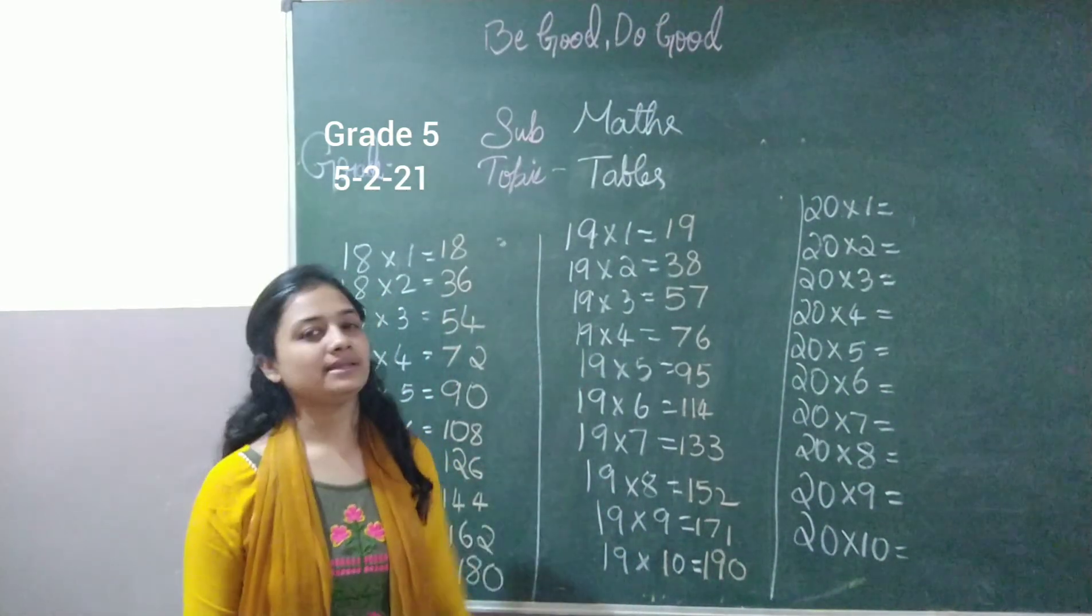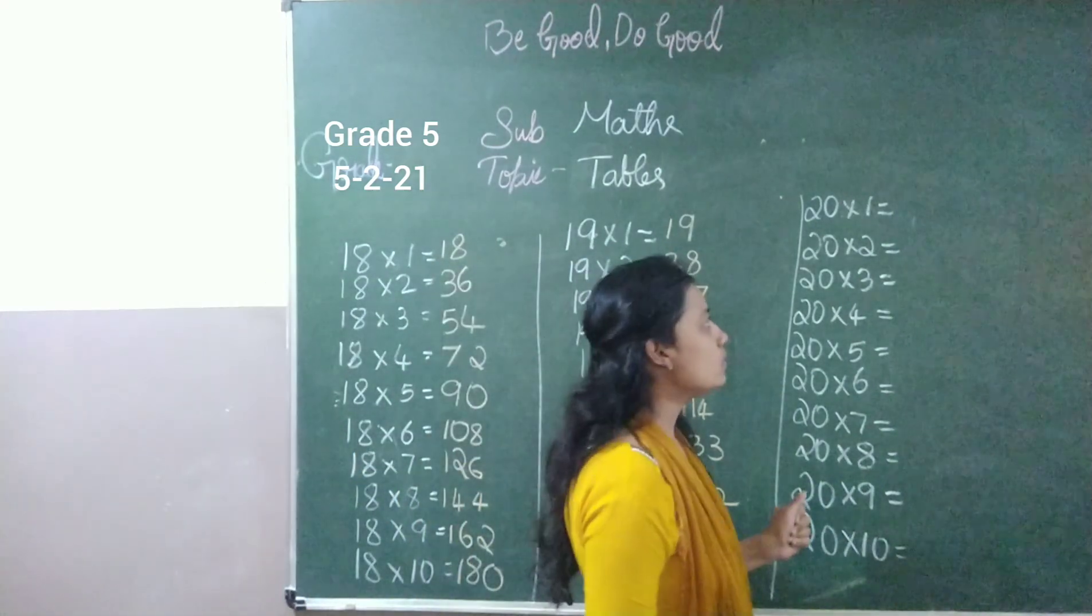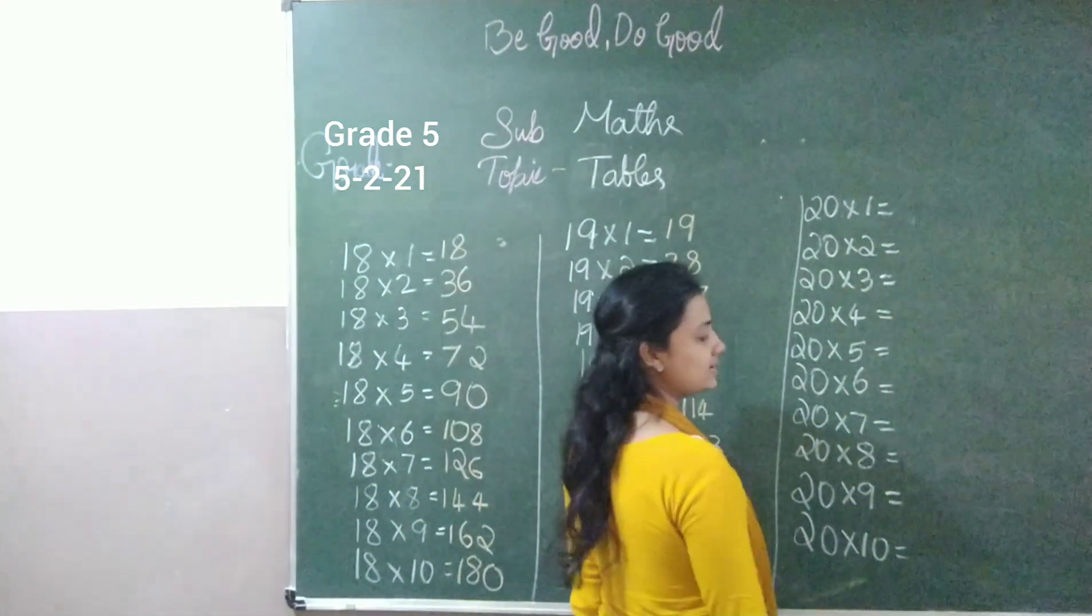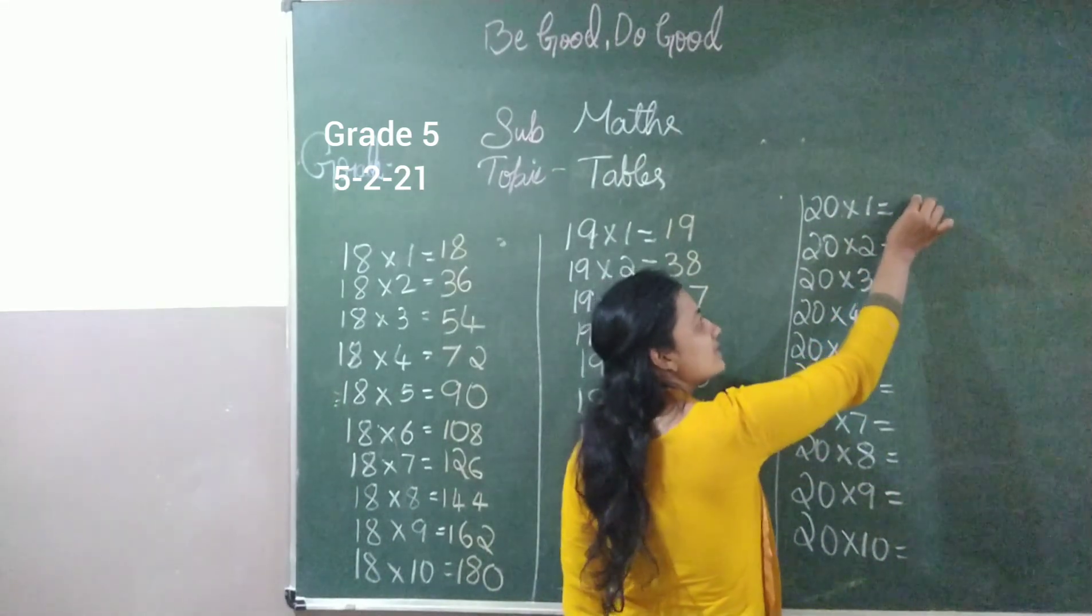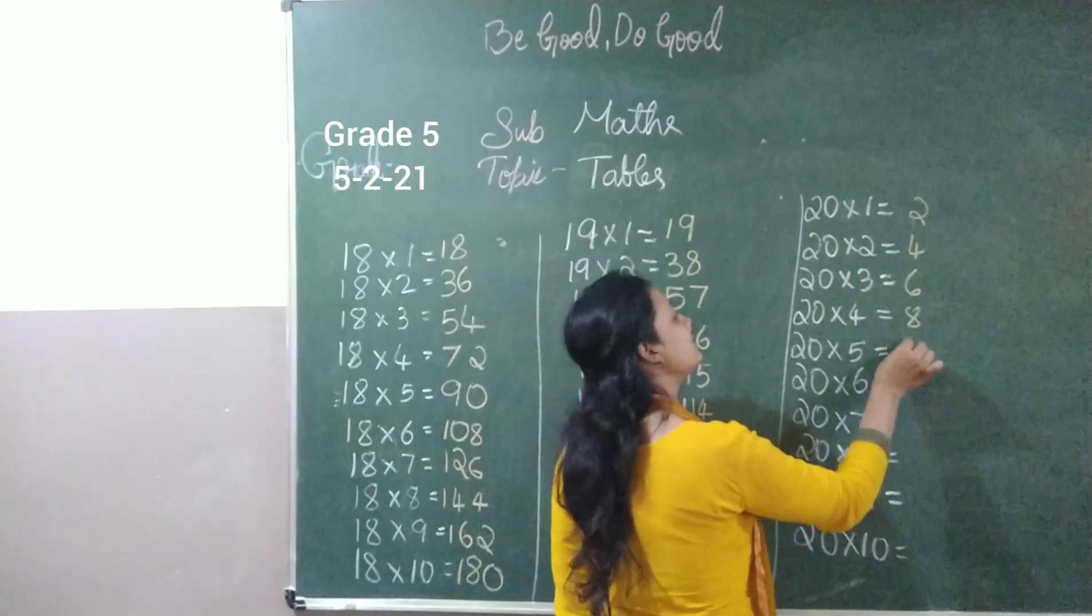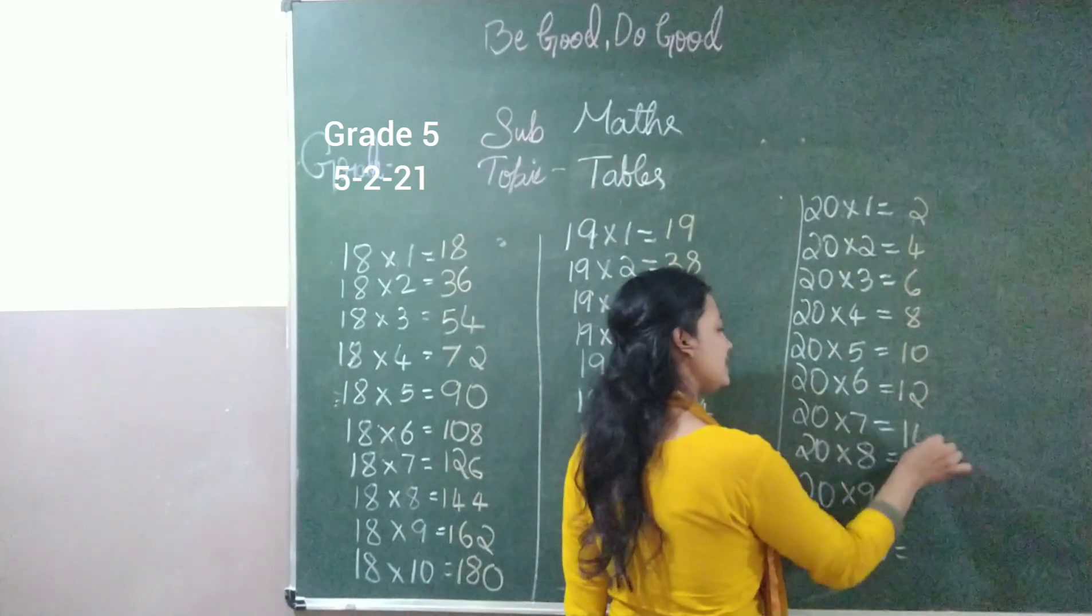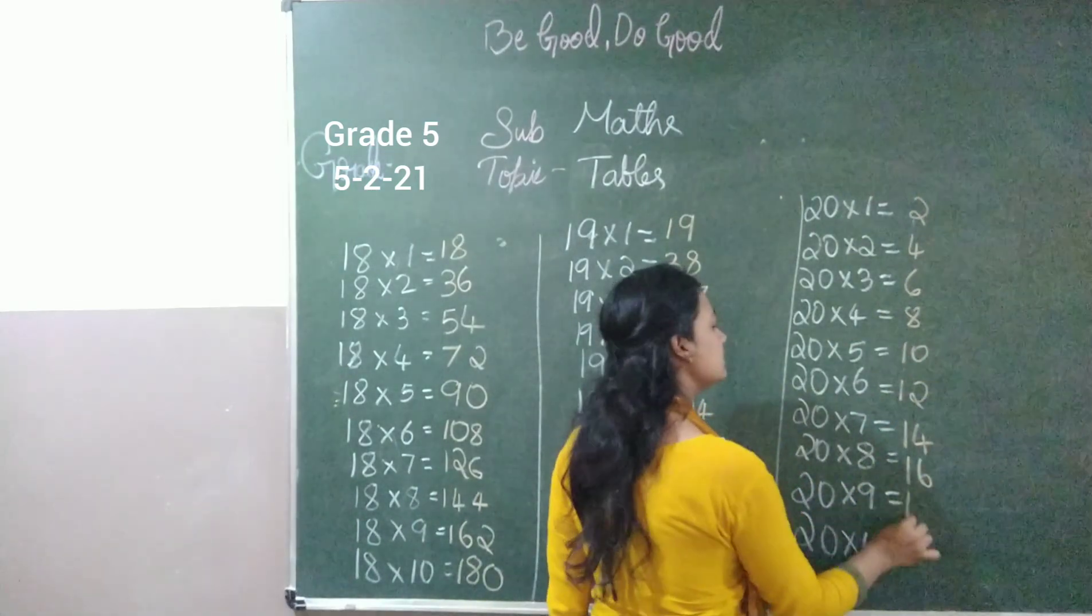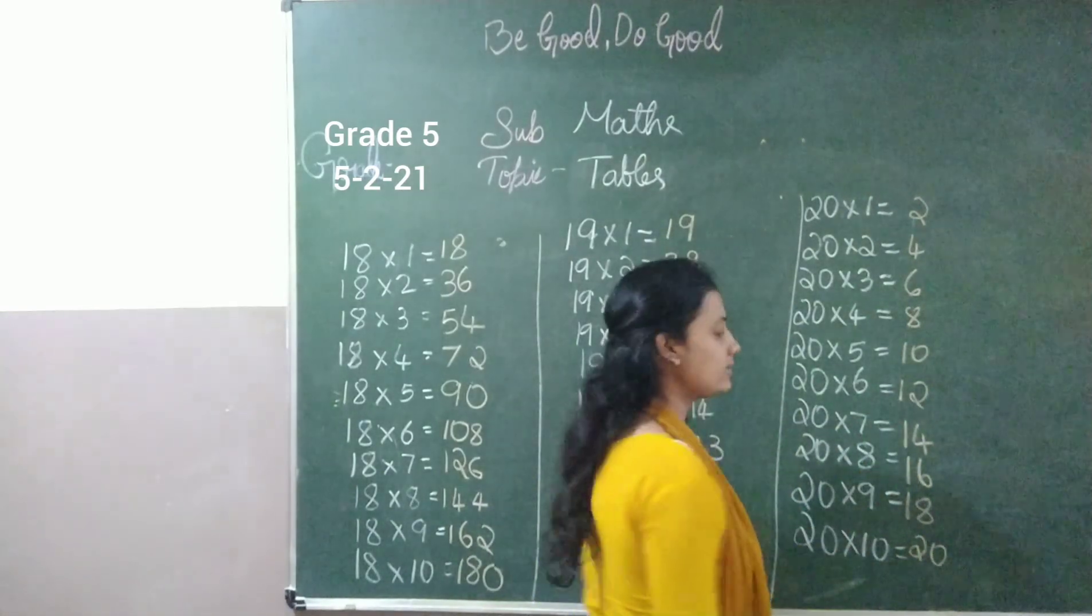So let's go for 20. And I know you feel 20 is very easy table. We just write two's tables first and add zeros in the last. Write down two's tables first. 2, 4, 6, 8, 10 and then 12, 14, 16 and 18 and 20. We wrote the 2 times table.